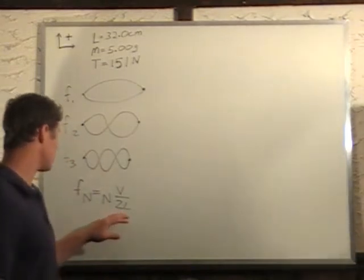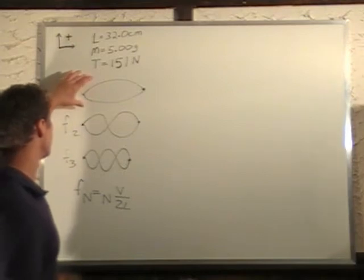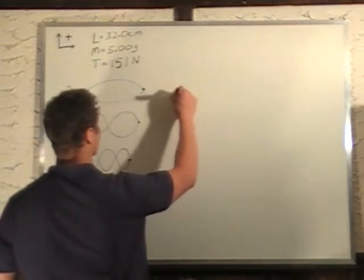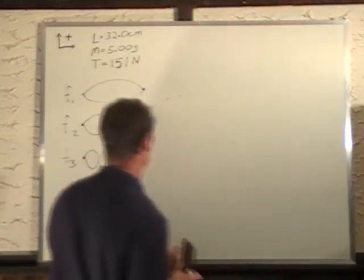So, now it's easy to actually derive this. If we look at this, we can see this is like half a wavelength, because if we kept going, that would be a full wavelength, right? And this is actually a full wavelength, this one.